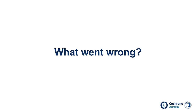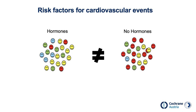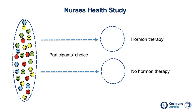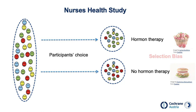So what went wrong with the Nurses' Health Study? The most likely explanation is that risk factors for cardiovascular events were not distributed equally between treatment groups. In the Nurses' Health Study, women could choose between taking hormones or not taking hormones, because at that time taking hormones after menopause was considered a healthy choice. Women who took them probably led healthier lives and had fewer cardiovascular risk factors — a common problem in observational studies called selection bias.